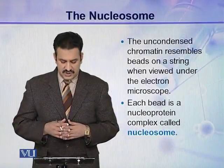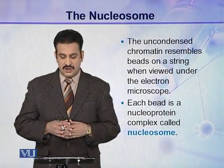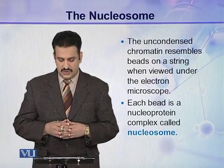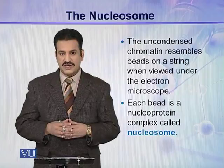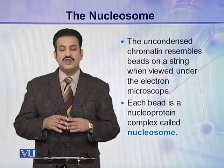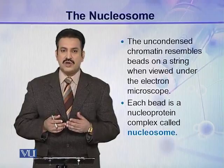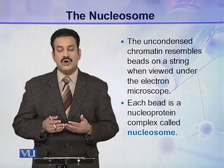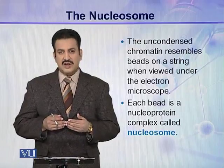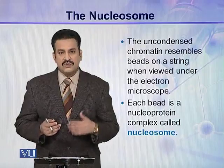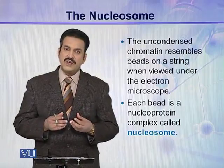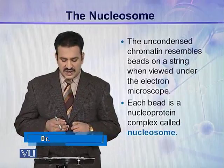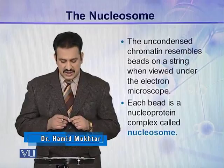The uncondensed chromatin, or euchromatin, resembles beads on a string when viewed under the electron microscope. In the interphase, when the cell is not dividing, chromosomes are not present. All the chromatin is in uncondensed form, and when viewed under the electron microscope, it appears as beads on a string.